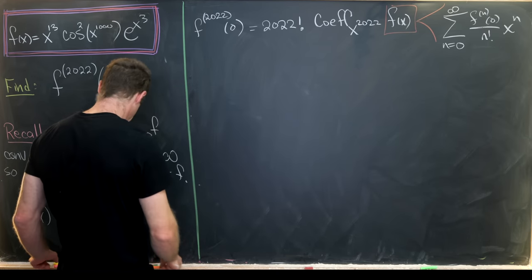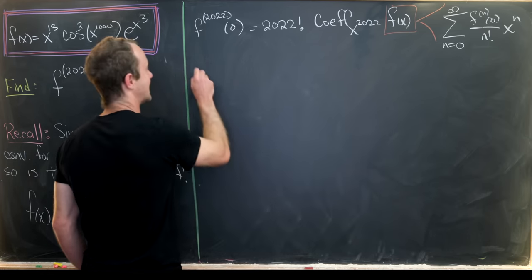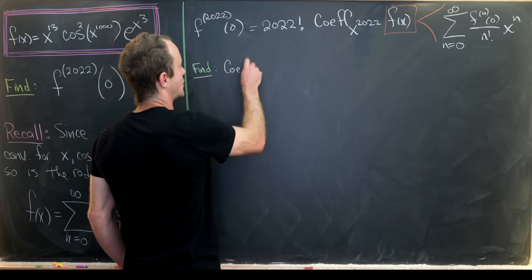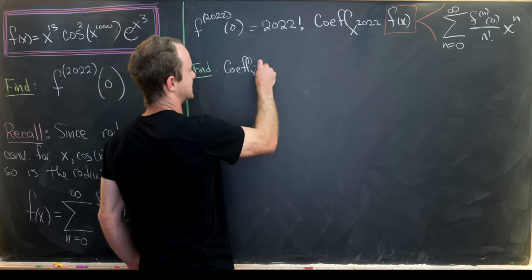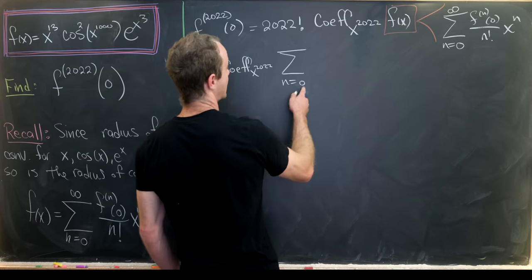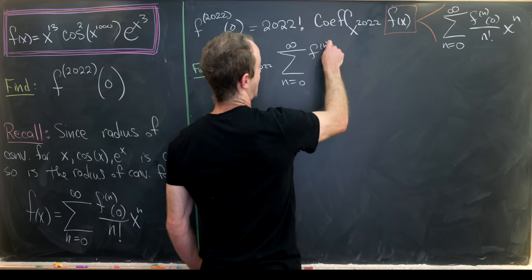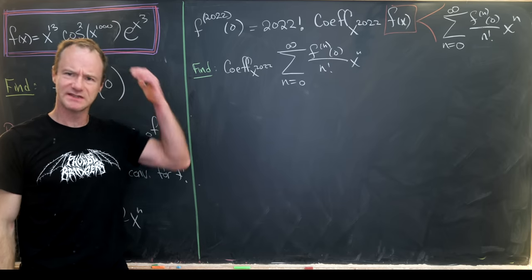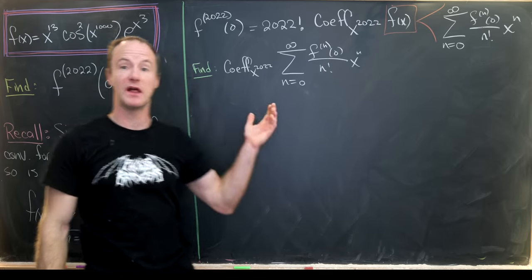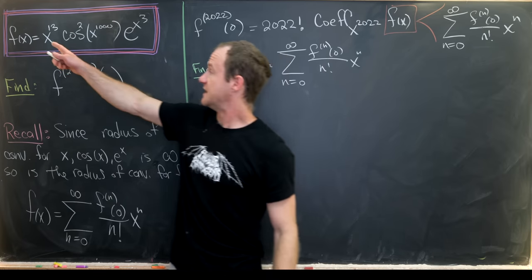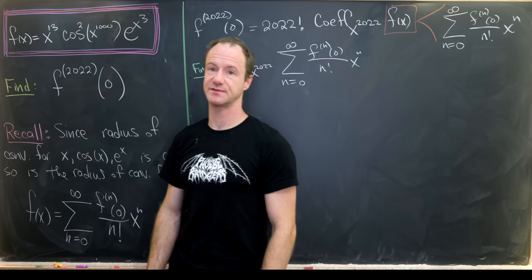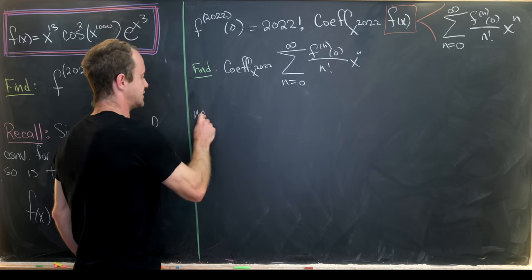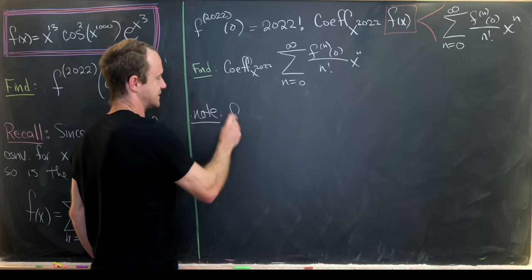So that really motivates the following intermediate goal, and that will be to find the coefficient of x to the 2022 of our sum as n goes from zero to infinity of this power series expansion. But that might seem like a lot of work too, but luckily these three functions have well-known power series expansions. In fact this x to the 13 is just itself. So let's use those well-known power series expansions.